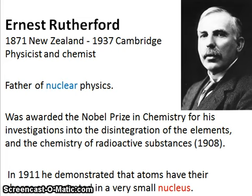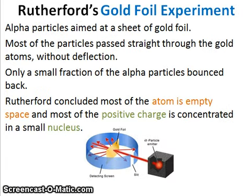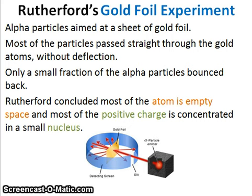Now we're going to study how he discovered the nucleus of the atom. Here we have the famous experiment Rutherford performed to discover the nucleus of the atom. This is called the gold foil experiment, or the Geiger-Marsden experiment. It received this name because Rutherford didn't work alone — he worked along with Hans Geiger and Ernest Marsden. This experiment demonstrated the nuclear nature of atoms by deflecting alpha particles passing through a thin gold foil.